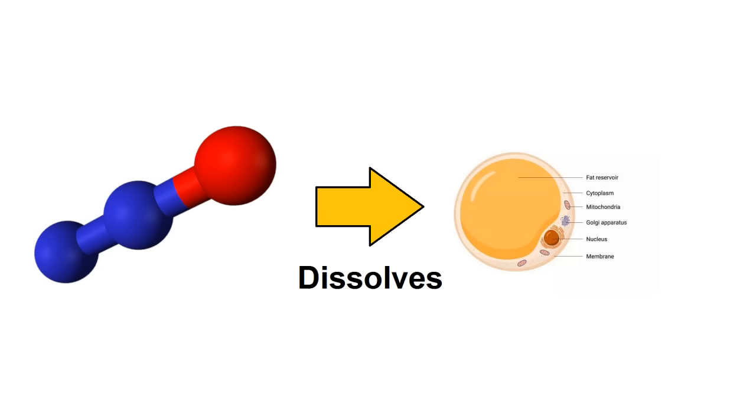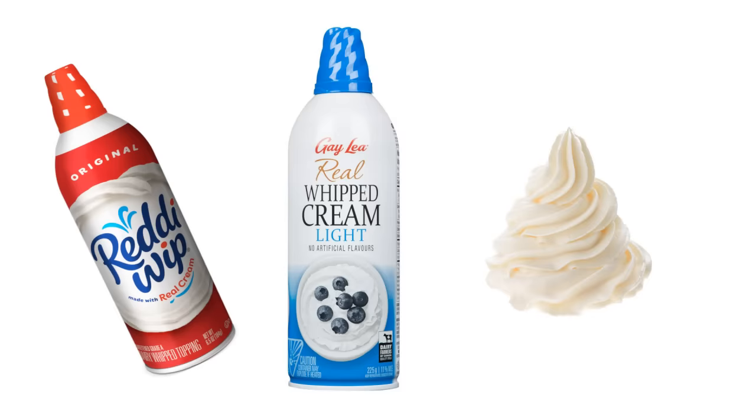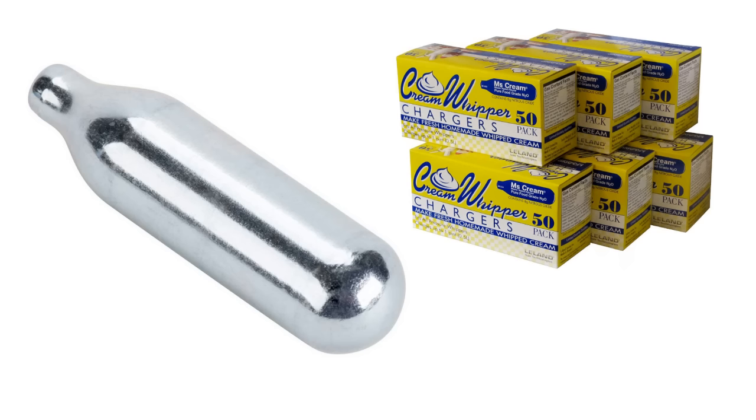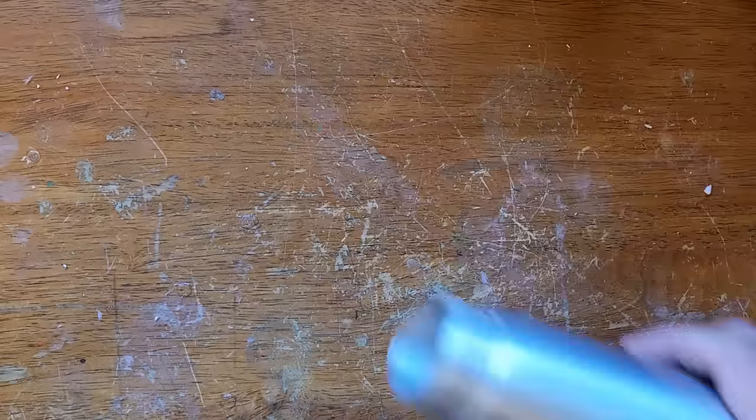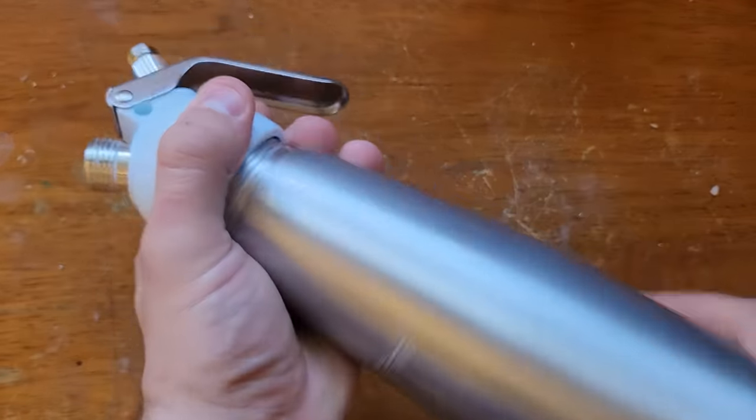Fortunately, the food industry has us covered. A unique property of nitrous oxide is that it can dissolve in fat cells and it's non-toxic, so it's used as an aerosol for dispensing whipped cream. It can be bought online or in some grocery stores as packs of 8 gram cartridges, which are then used to pressurize a container full of cream.